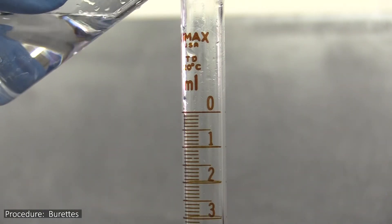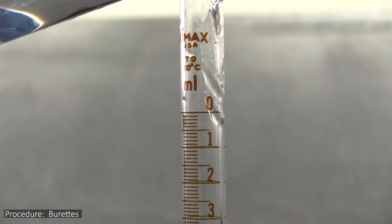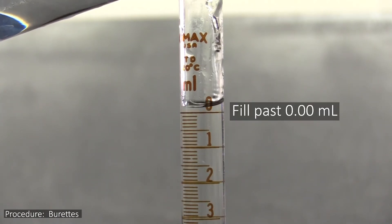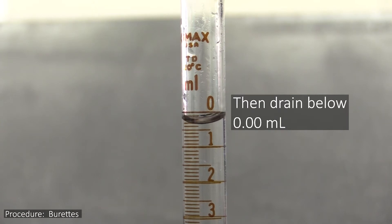To set one of these up, you first rinse it with the solution you were going to dispense out of it, in this case sodium hydroxide. You then fill it past the 0.00 mL mark and drain a little bit of the fluid out, enough to get the fluid below the 0.00 mL mark.